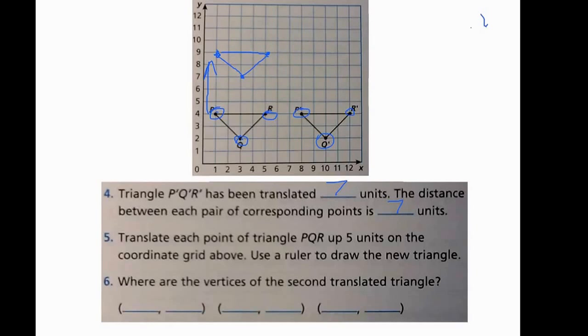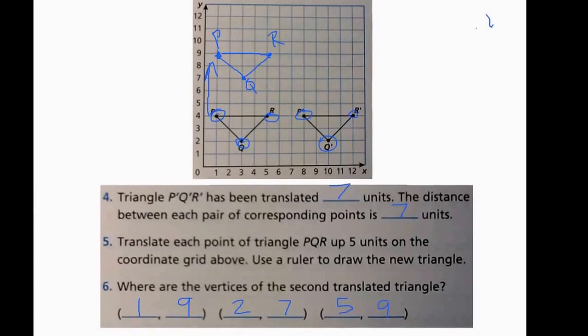Now, I went ahead and connected our points, so now you can see I have our new triangle PQR that has been translated up 5 units. Now, for number 6, we need to write the new vertices of this second translated triangle, so our brand new triangle we've drawn. So, for the first point P, for our new point P, looking at it, I know that the x-axis, it would be 1, and then it's at 9 for the y-axis. Our new point Q would be at 2 for the x-axis and 7 for the y, and then our new point R would be at 5 for the x-axis and 9 for the y-axis.